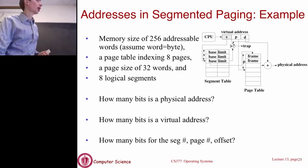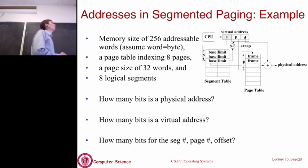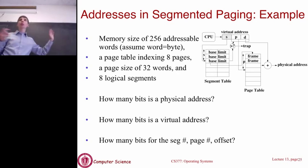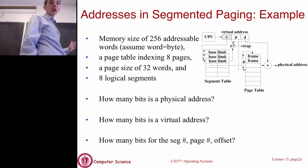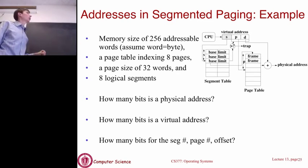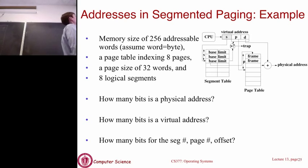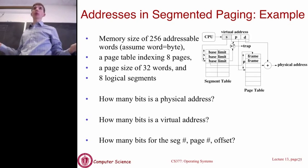Let's look at an example. Say we have 256 addressable words — for now assuming a word is a single byte — a page table indexing 8 different pages, a page size of 32 words, and 8 logical segments. The 8 segments is somewhat arbitrary.